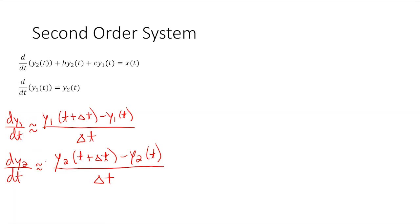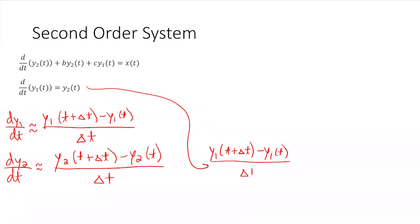Let's keep going. I have these derivative approximations and I'm dumping them into the equations. Starting with the simpler bottom equation: [y1(t+Δt) − y1(t)] / Δt = y2(t). I combined the finite-difference approximation with that equation. This gives me an algebraic equation I can solve.